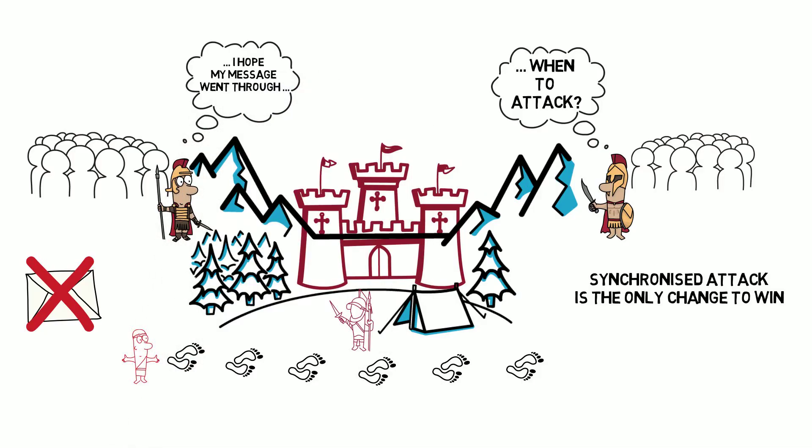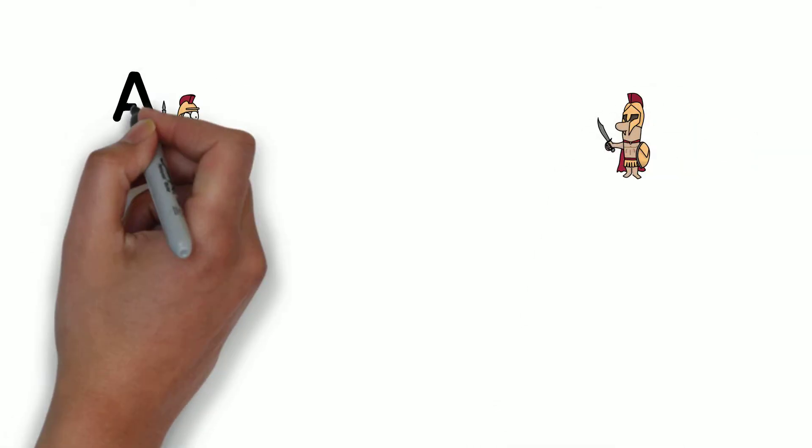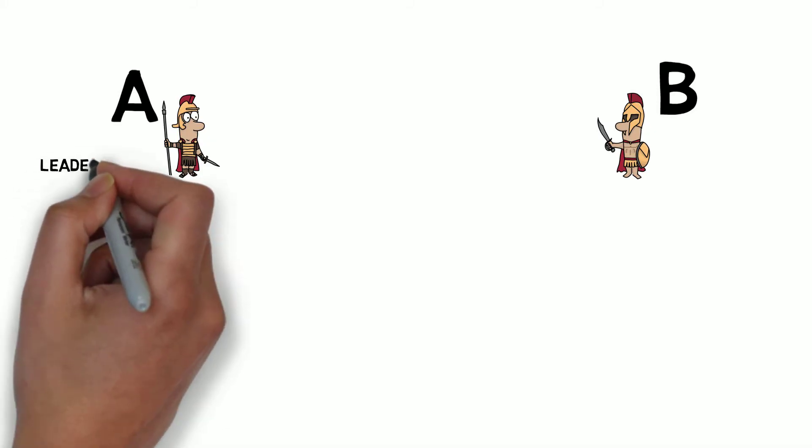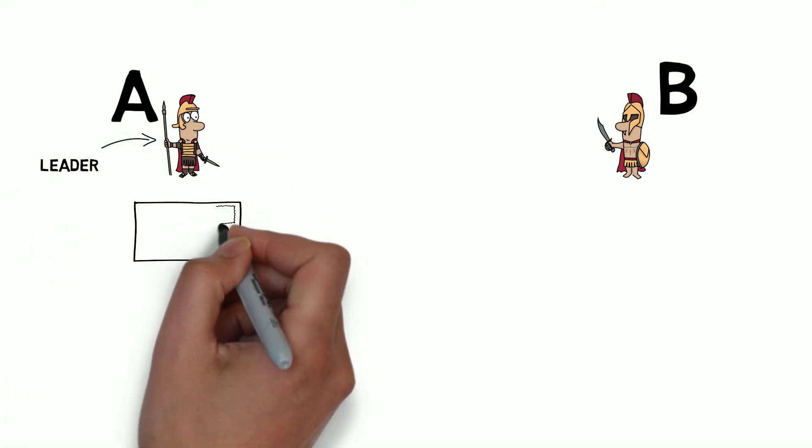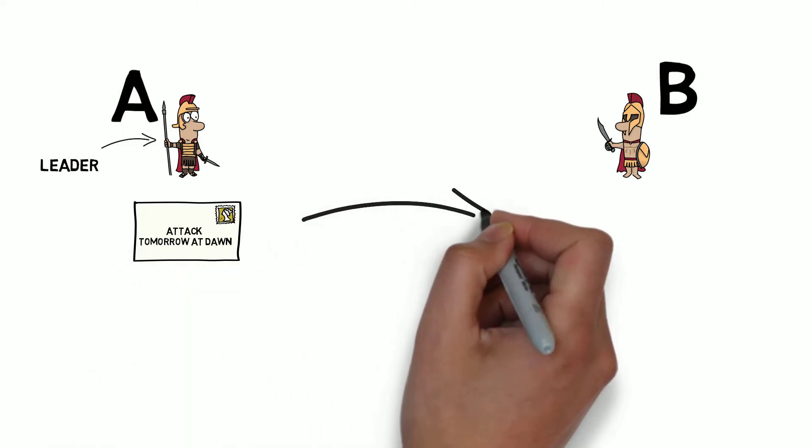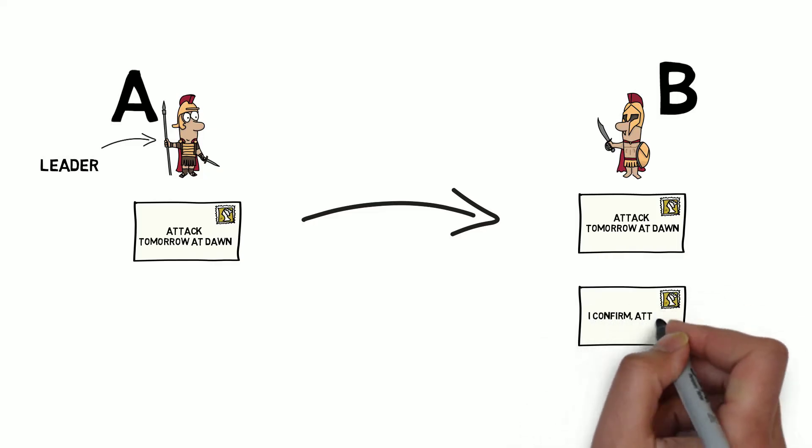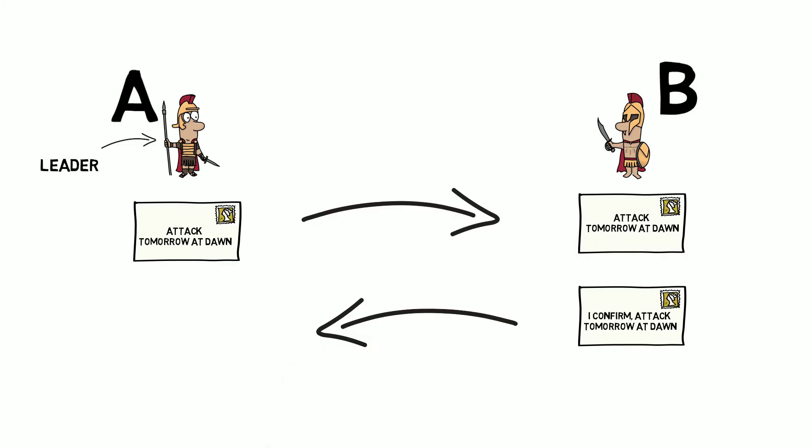Now let's go through a simple scenario. Let's call our generals A and B, and let's assume everything goes perfectly fine. General A, who's the leader, sends a message: Attack tomorrow at dawn. General B receives the message and sends back an acknowledgement: I confirm, attack tomorrow at dawn.